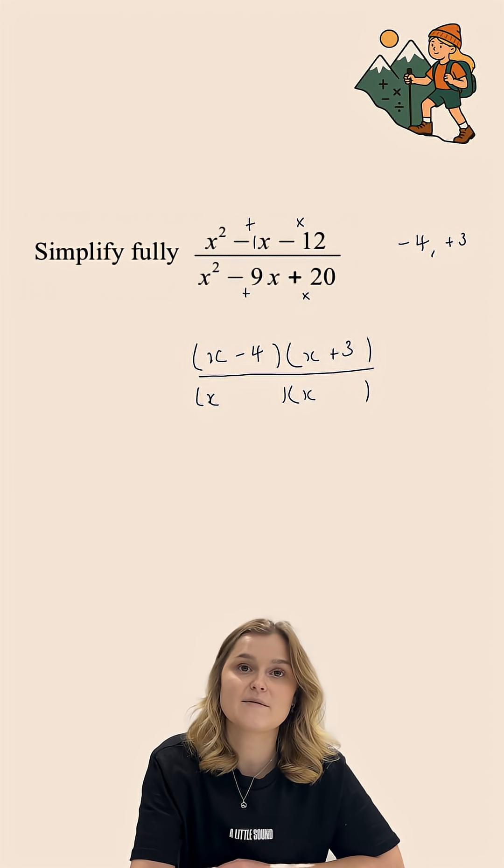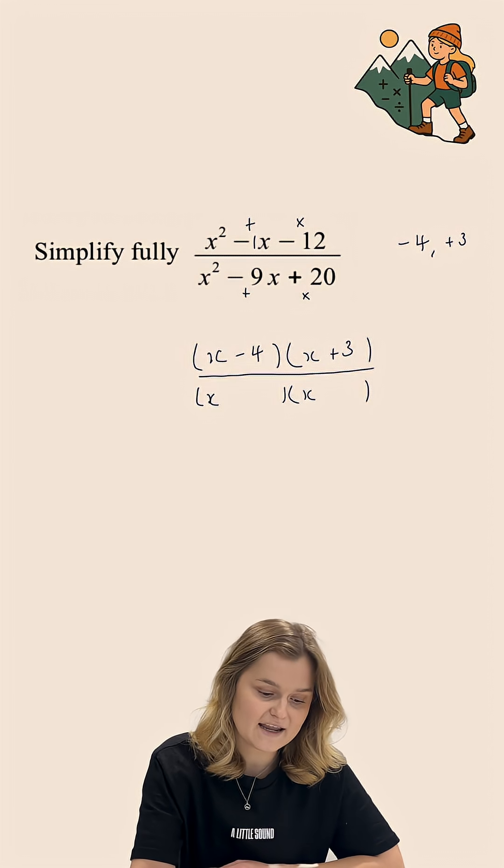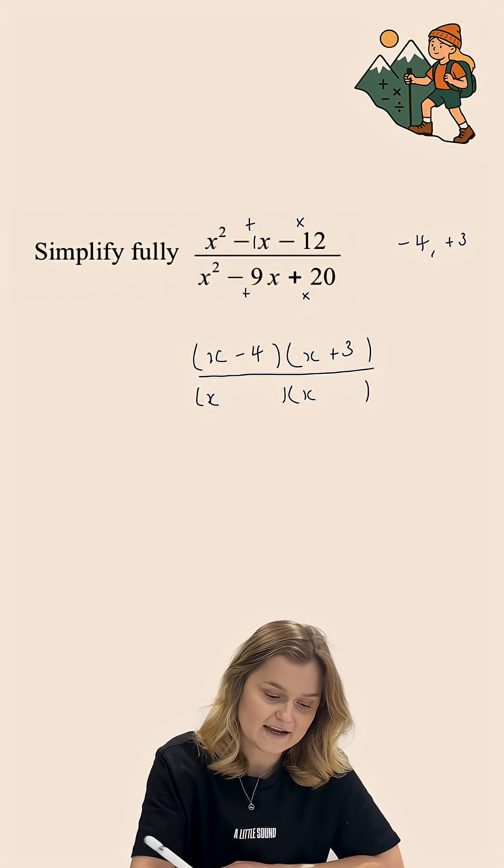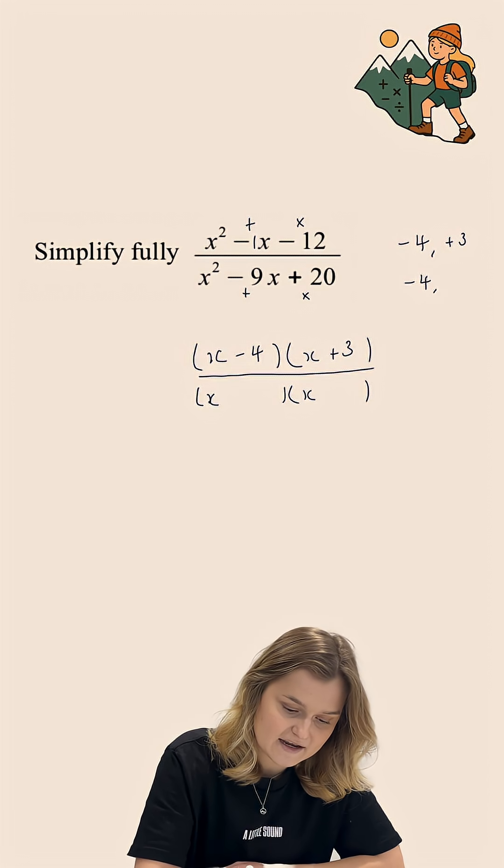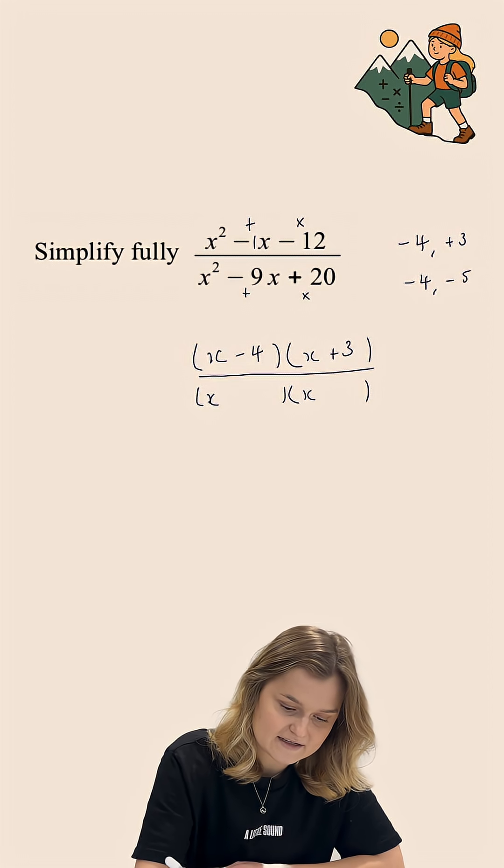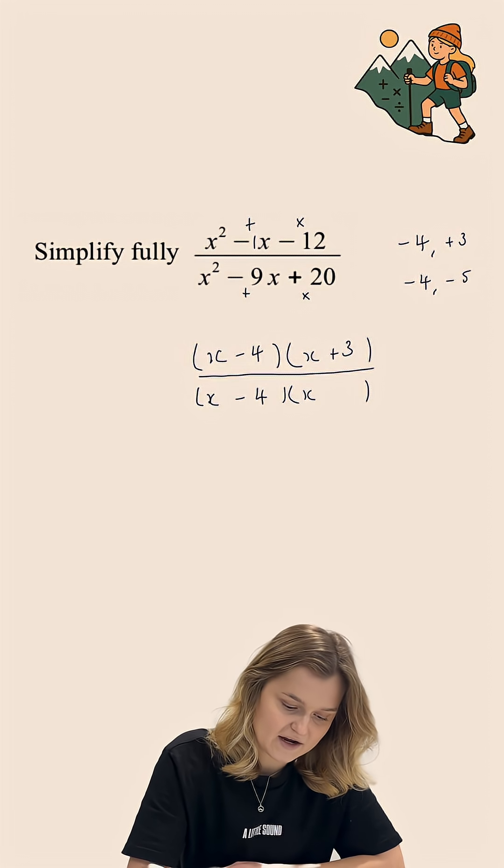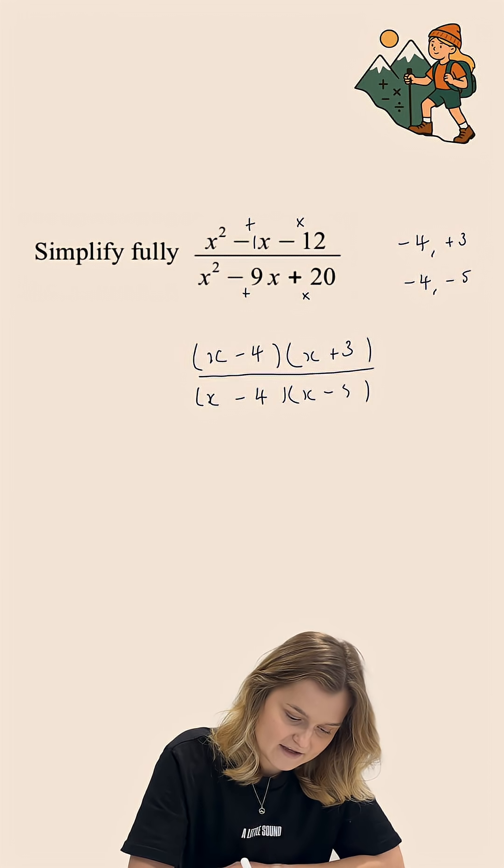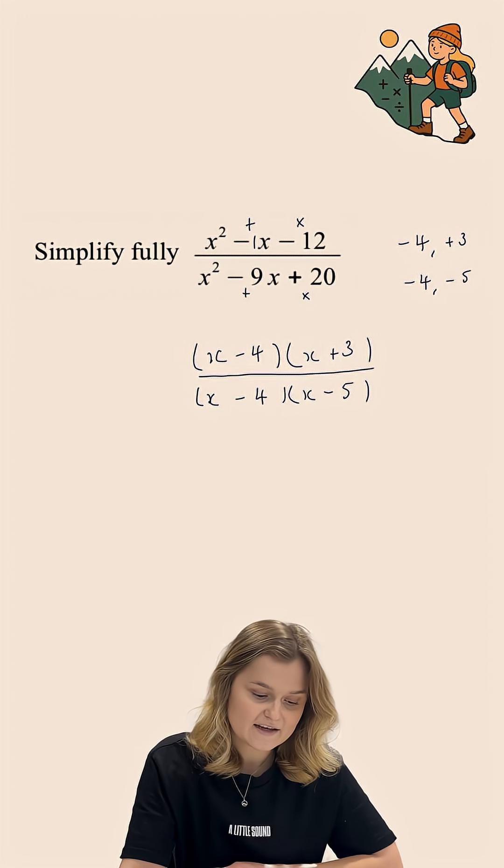Now, because they need to multiply to make a positive, but add to make a negative, both numbers are going to be negative. And in this case, it's going to be negative 4 and negative 5. So, in my brackets, I have x minus 4, and I have x subtract 5.